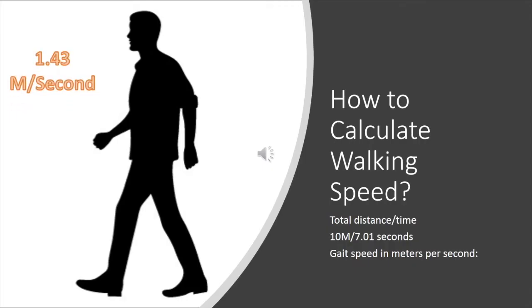To calculate the gait velocity, it's total distance divided by time. In our particular example, it would be 10 meters divided by 7.01 seconds, which would give a gait speed in meters per second of 1.43.